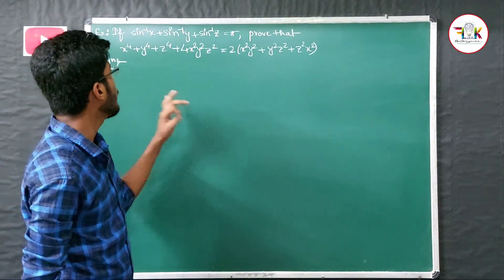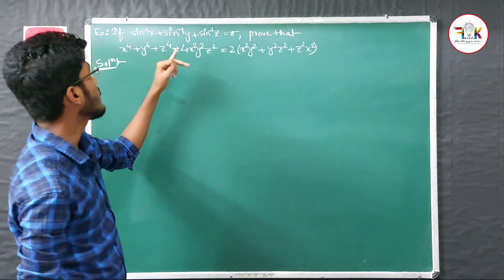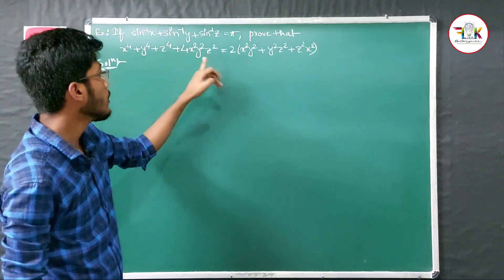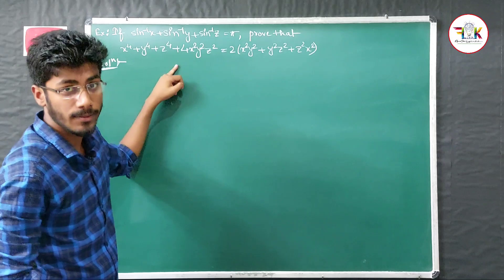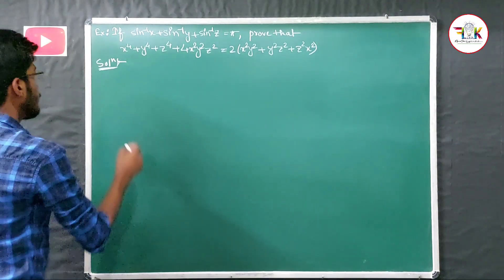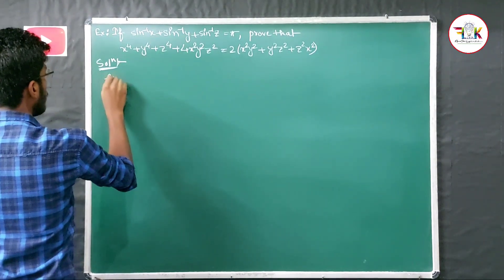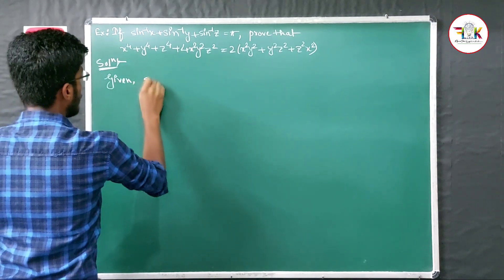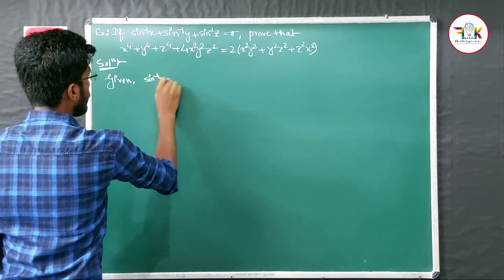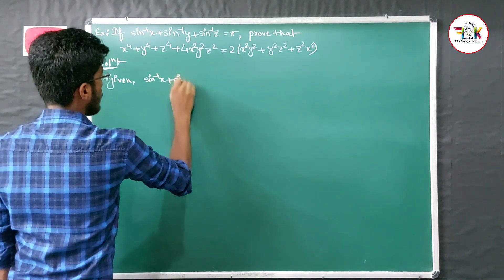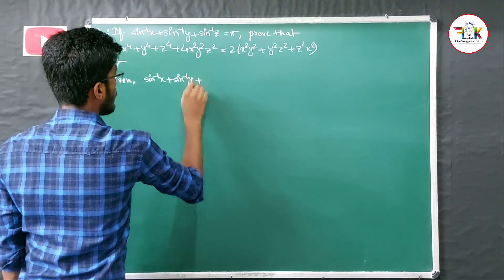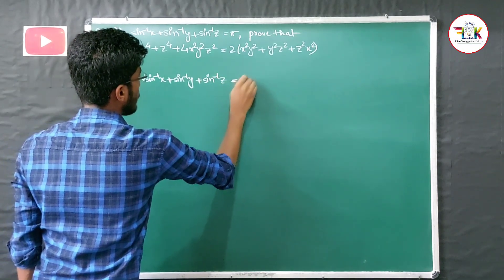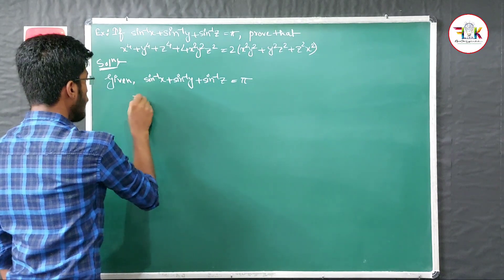The third question states: if sin⁻¹(x) + sin⁻¹(y) + sin⁻¹(z) = π, prove the required identity. Let us see what needs to be proved. We are given that sin⁻¹(x) + sin⁻¹(y) + sin⁻¹(z) = π.